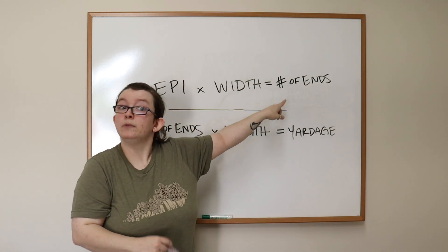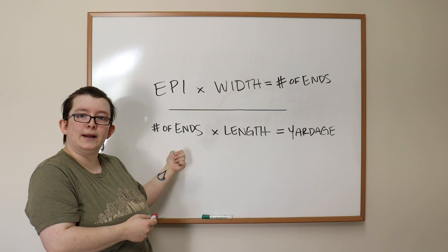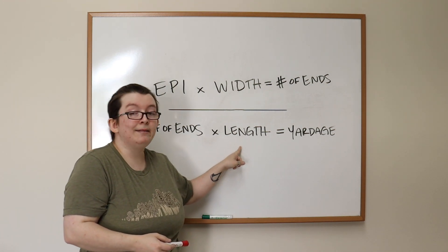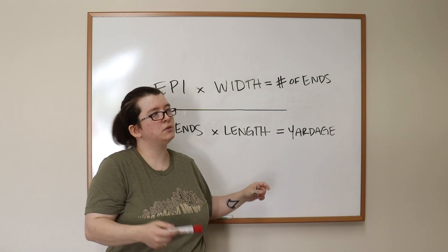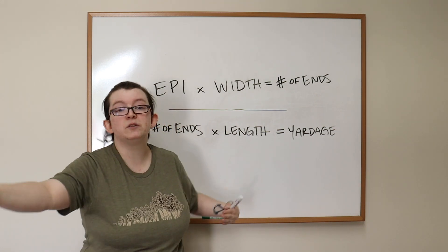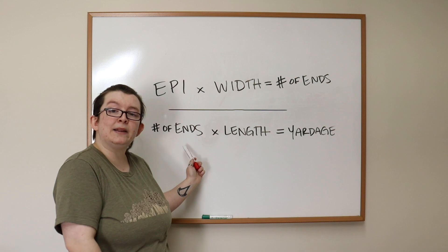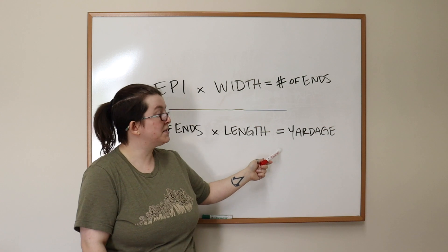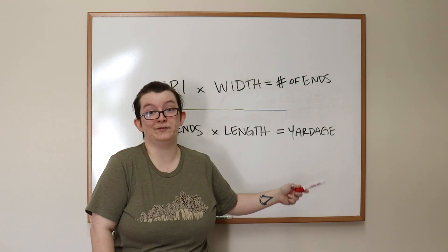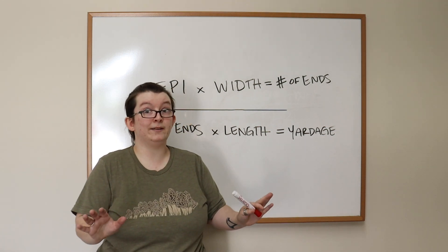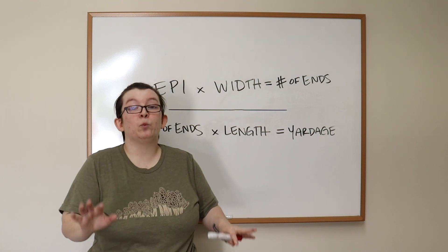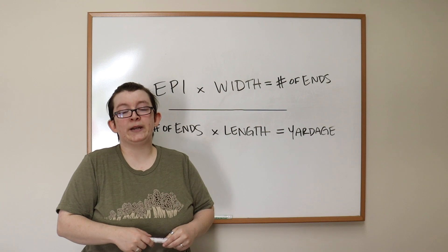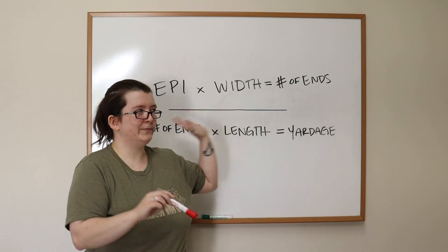So then we're going to take this number here, the number of ends, bring it down here, and we're going to multiply that number by the length of your warp. So just as an example, if you have a two yard warp, you're going to multiply that by how many ends are in your project, which you figured out up here. And that is going to give you the total number of yardage. I know that sounds like a lot, but let's break it down with actual numbers and plug some things in and talk about them a little bit. And I promise that it will dispel any confusion.